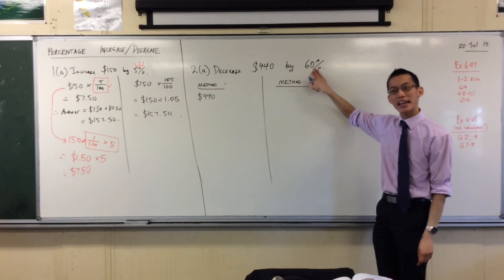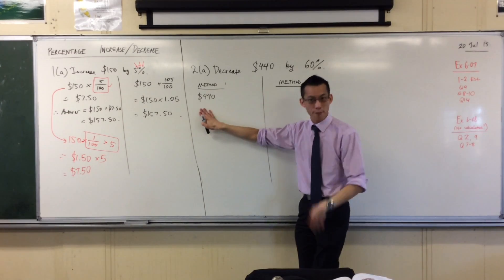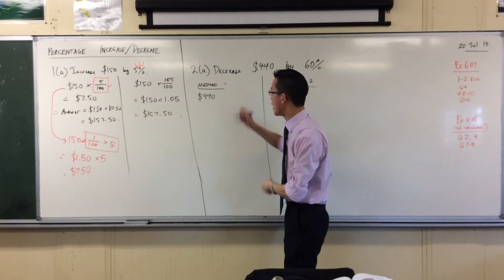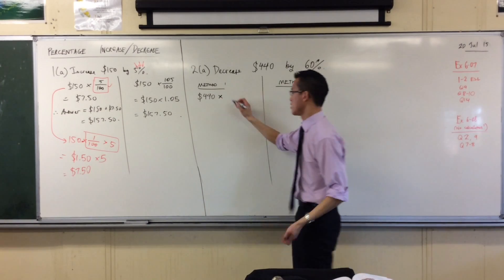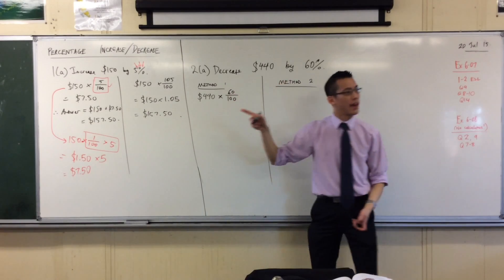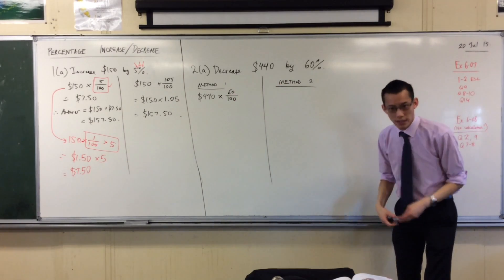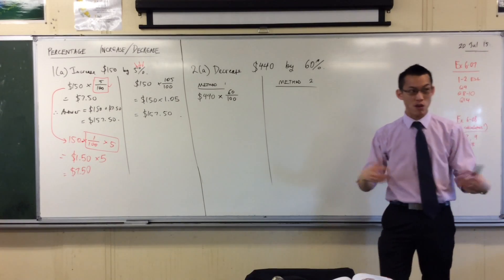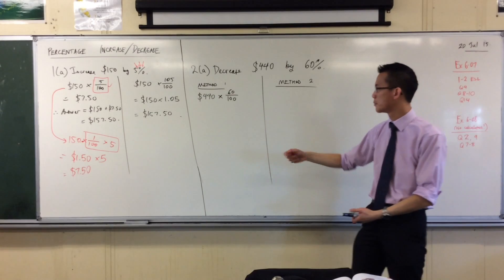I still want to work out 60%, that's how much I will be taking away. So here's my amount: $440. To find 60% of it, I will multiply by 60 over 100. That's the 60% in there. And some of you have noticed: 60 over 100 is 6 over 10, that's also 3 over 5. They're all equivalent fractions — they will all give you the same answer.